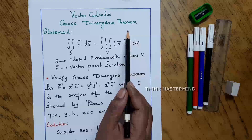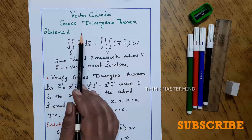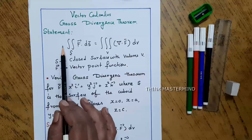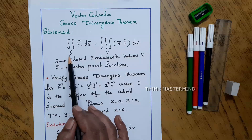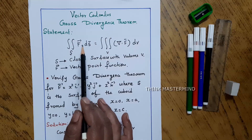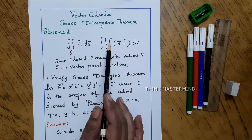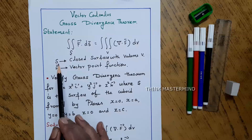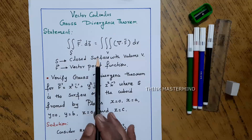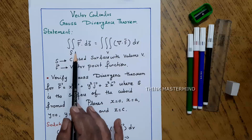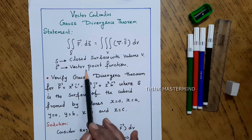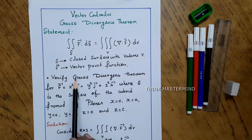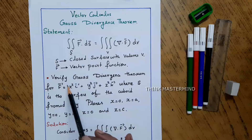Gauss Divergence Theorem in Vector Calculus is a very important topic for first year engineering students. The statement of Gauss Divergence Theorem is: the double integral over S of f dot dS is equal to the triple integral over V of del dot vector f dV, where S is the closed surface with volume V and vector f is a vector point function with continuous first order derivatives.